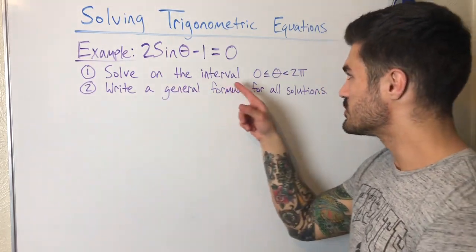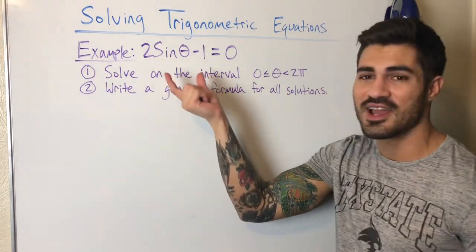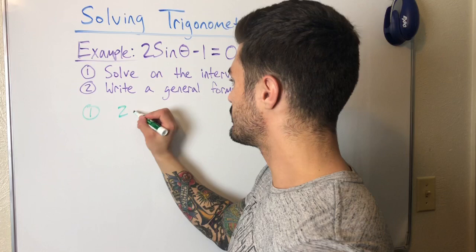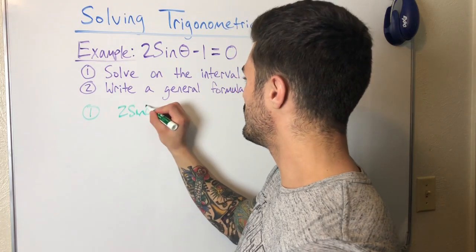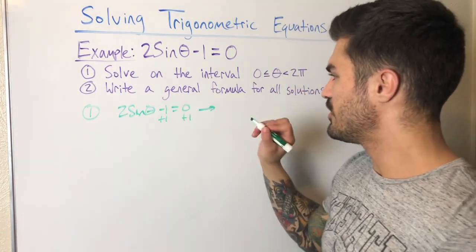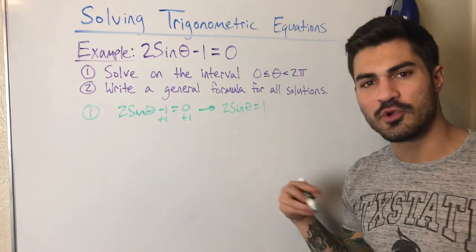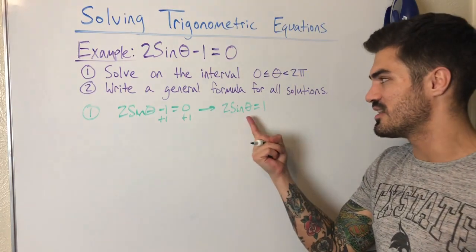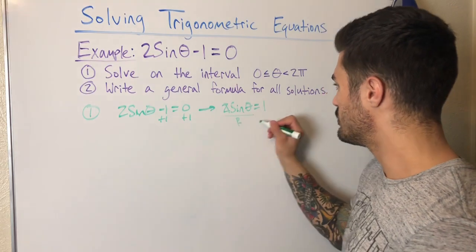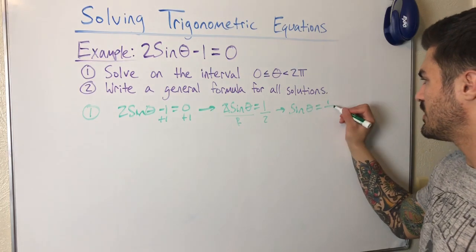Number one: solving on the interval from zero to two pi. My strategy is always to isolate the trig piece first — I want to get sine theta equals something. Starting with two sine theta minus one equals zero, I add one to both sides to get two sine theta equals one, then divide both sides by two, leaving me with sine theta equals one half.